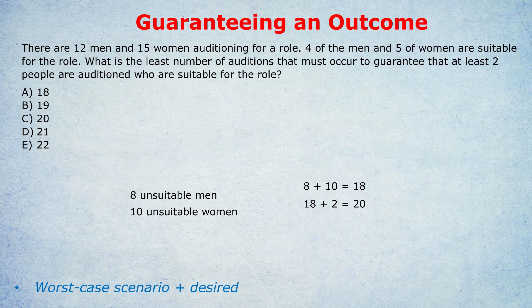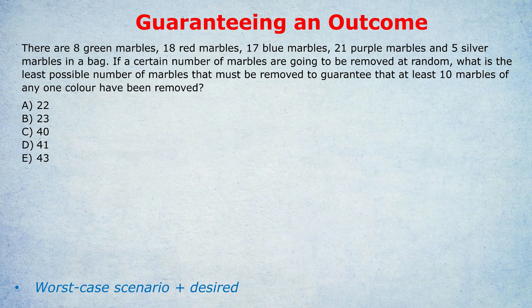We're going to use that same logic now for a harder example. Please do pause the video, try it yourself, and see what you get. We're going to use the same methodology: worst case scenario plus desired. Here's the question: there are 8 green marbles, 18 red marbles, 17 blue marbles, 21 purple marbles, and 5 silver marbles in a bag. If a certain number of marbles are removed at random, what is the least possible number of marbles that must be removed to guarantee that at least 10 marbles of any one colour have been removed?